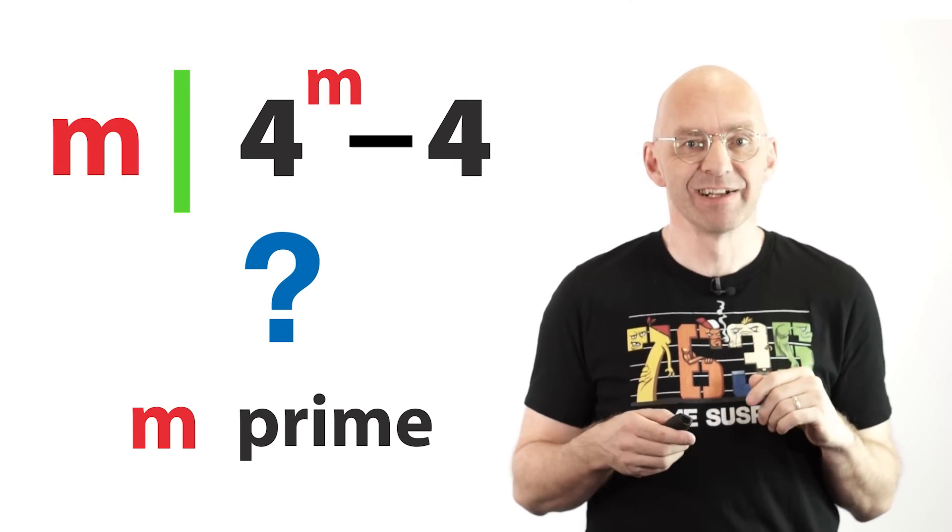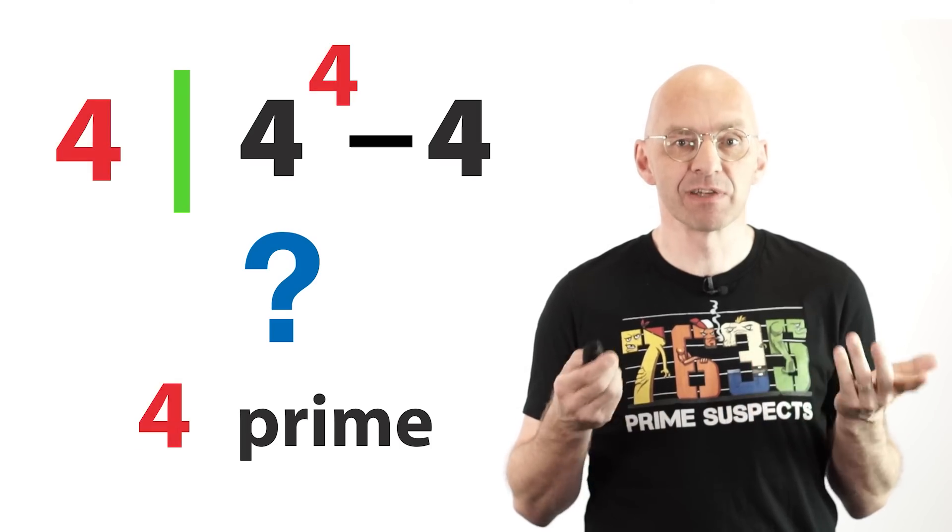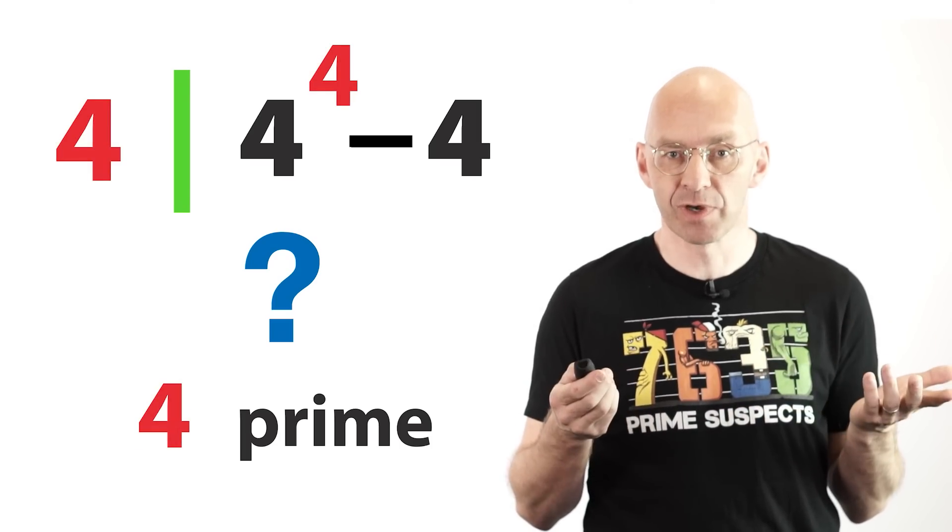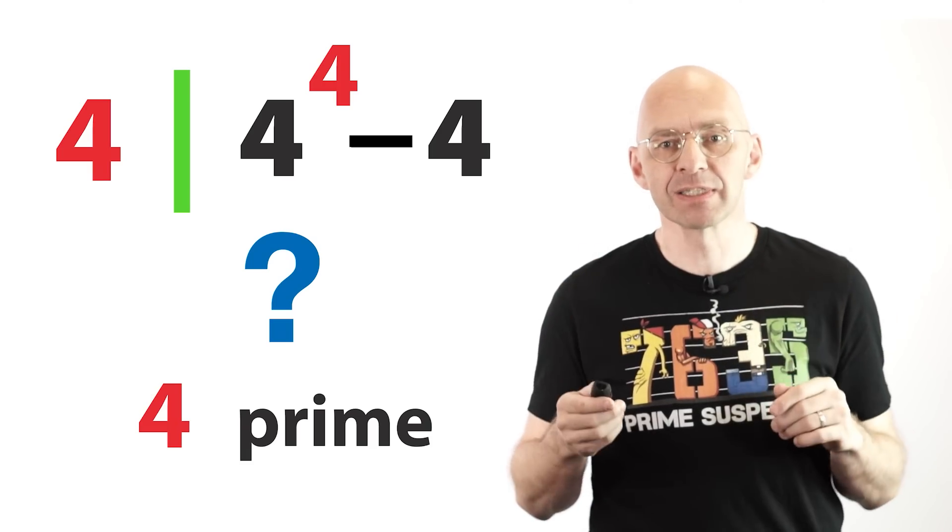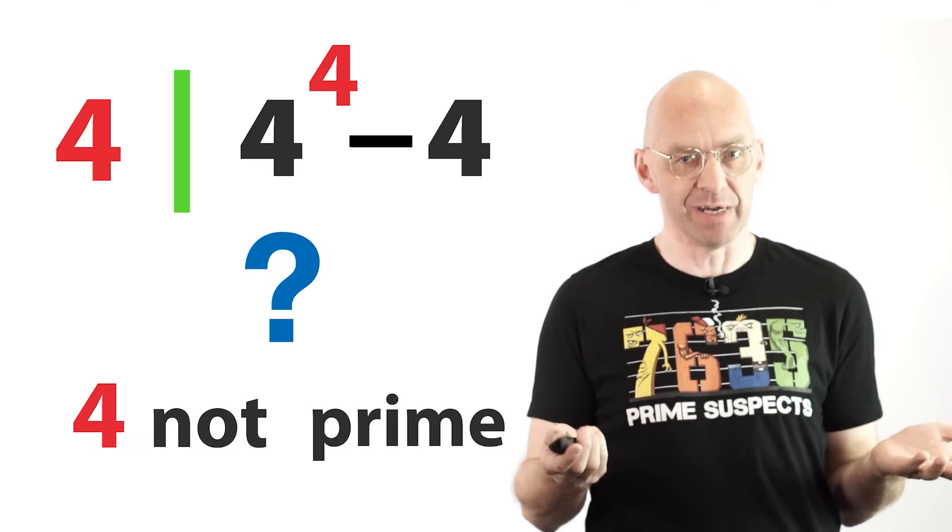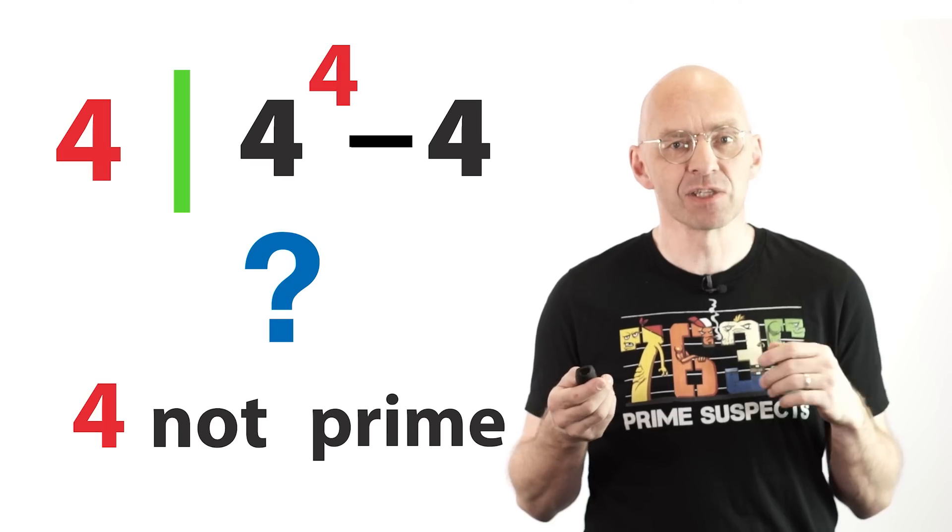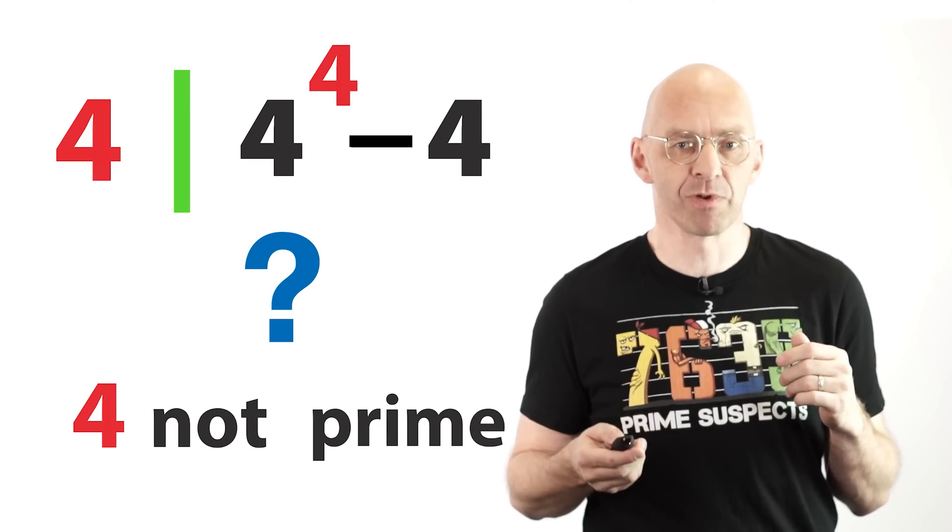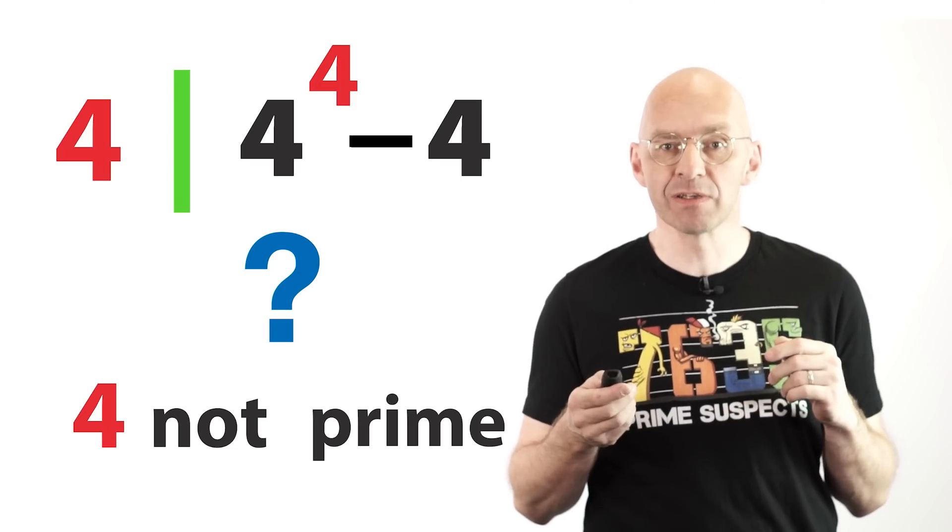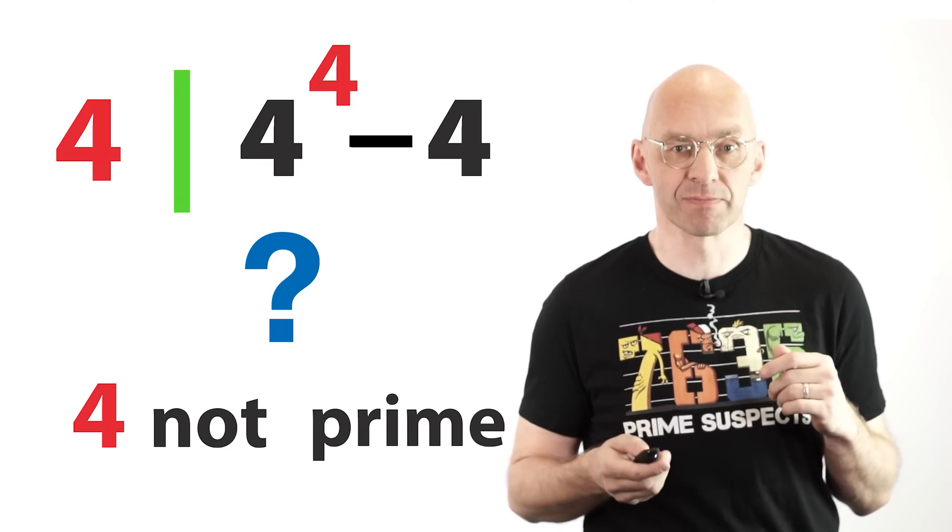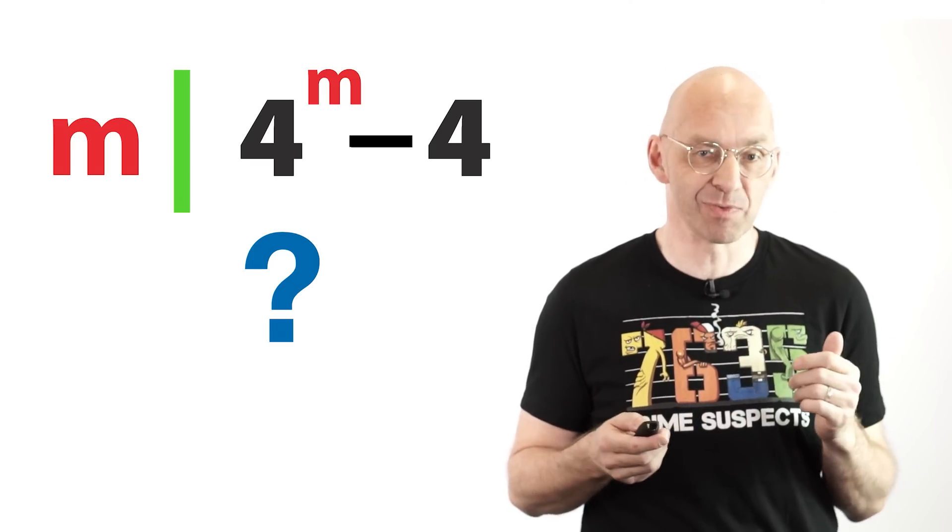Sadly, the answer is no. For example, if we test m equals 4, then the difference is definitely divisible by 4, since both terms on the right are divisible by 4. But of course, 4 is very much not prime. Bummer! Still, 4 is a pretty special number for this setup, so maybe this is all worth a little more exploration. So let's do an experiment. We let Mathematica check divisibility for the first 1000 integers. Let's see how many non-primes and maybe primes get discovered this way.